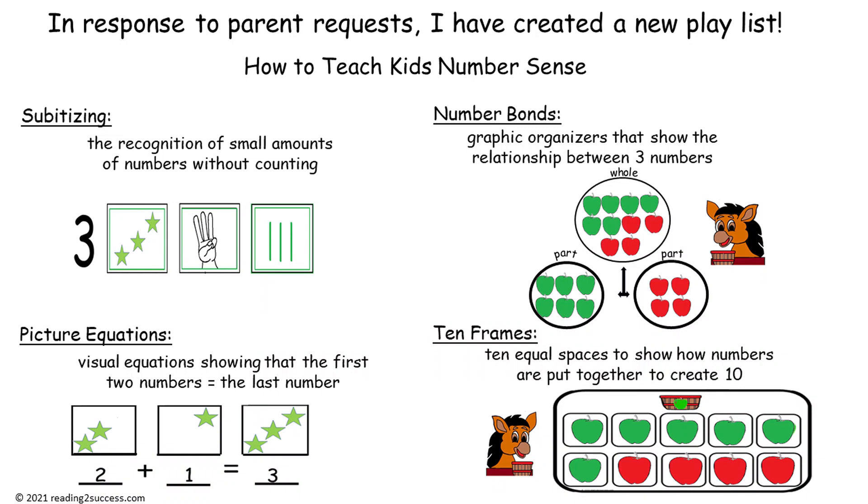Picture equations—visual equations showing that the first two numbers equal the last number. Number bonds—graphic organizers that show the relationship between three numbers. And ten frames—ten equal spaces to show how numbers are put together to create ten.